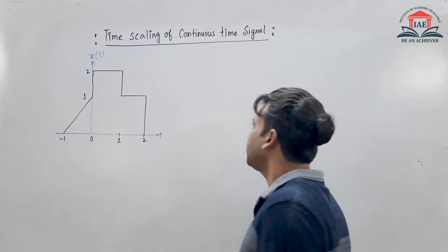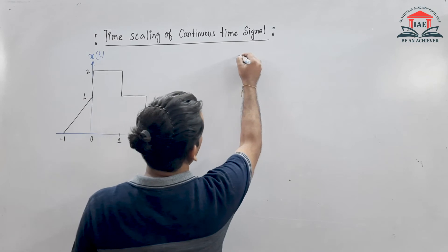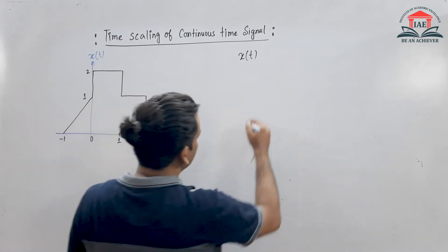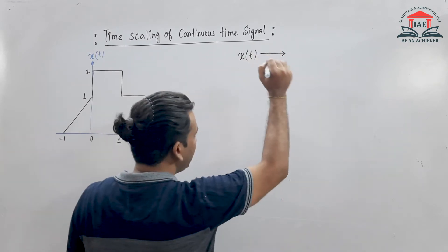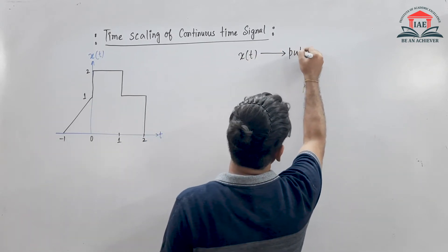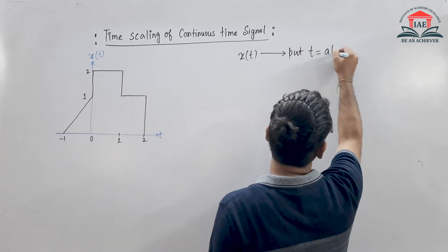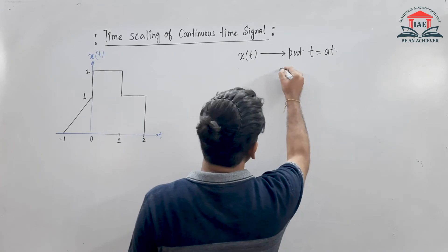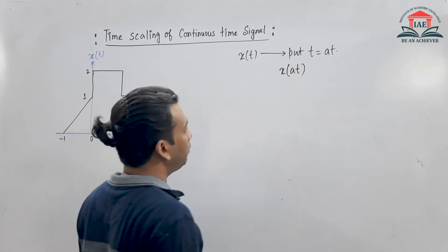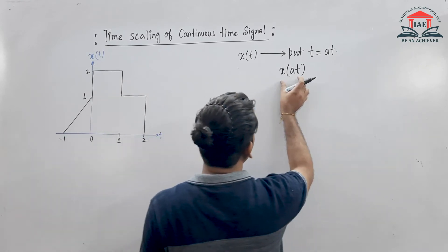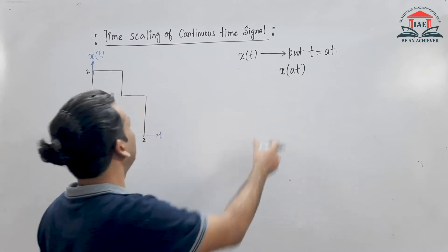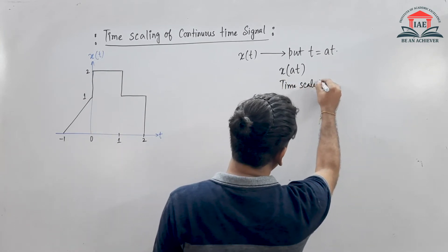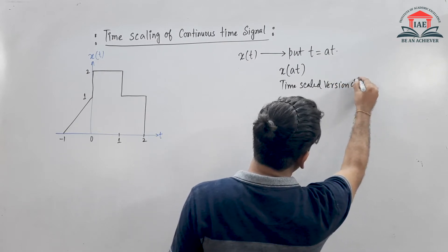Suppose I have a signal x(t), which is a continuous time signal. Now let us replace the value of t with a·t. Here, 'a' is the time-scaling parameter. So if we put that value, the signal becomes x(a·t), and this x(a·t) is called the time-scaled version of x(t).